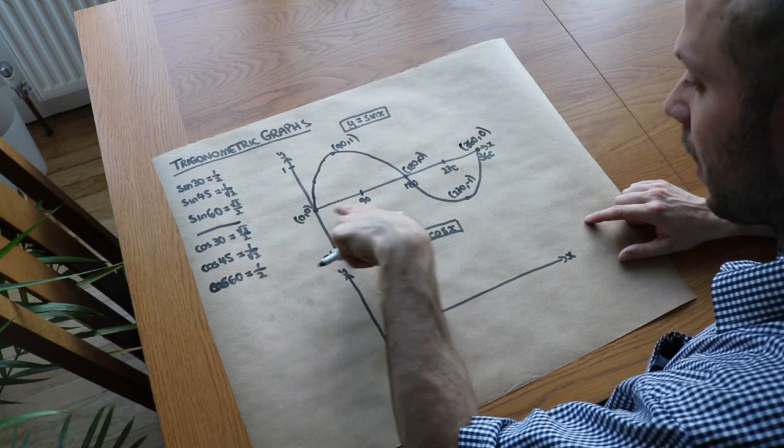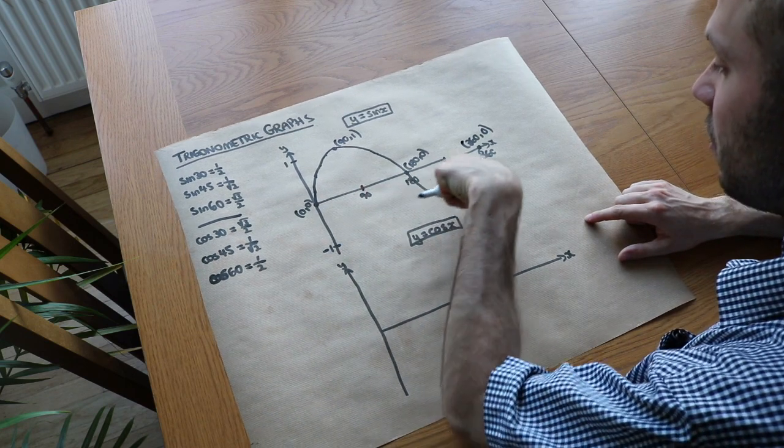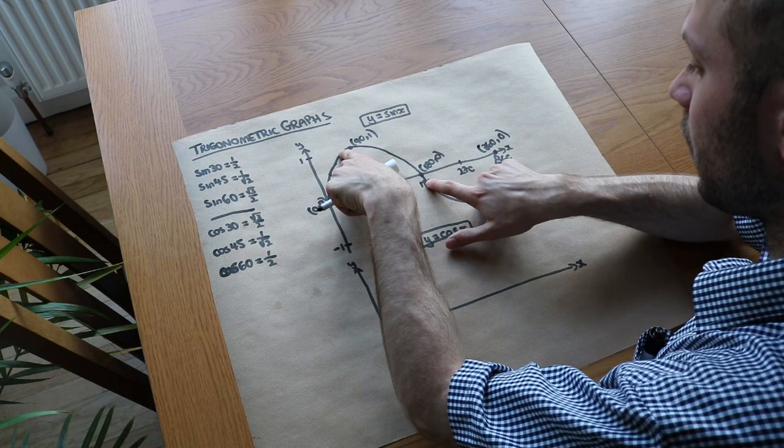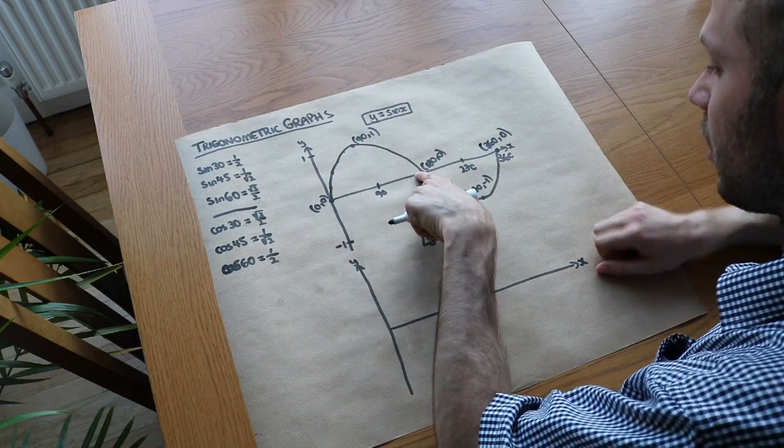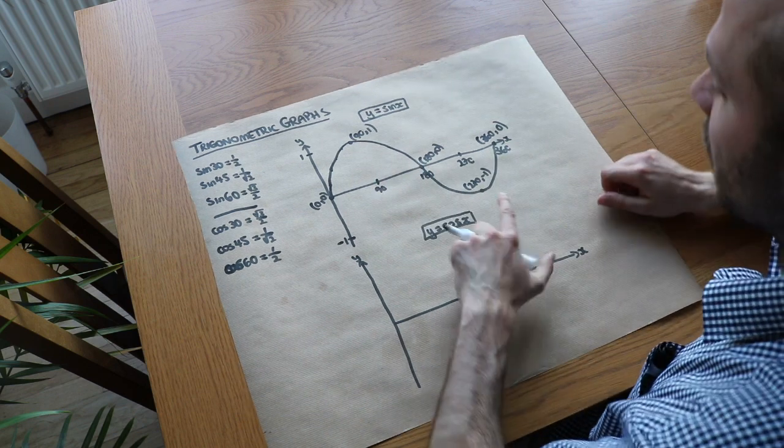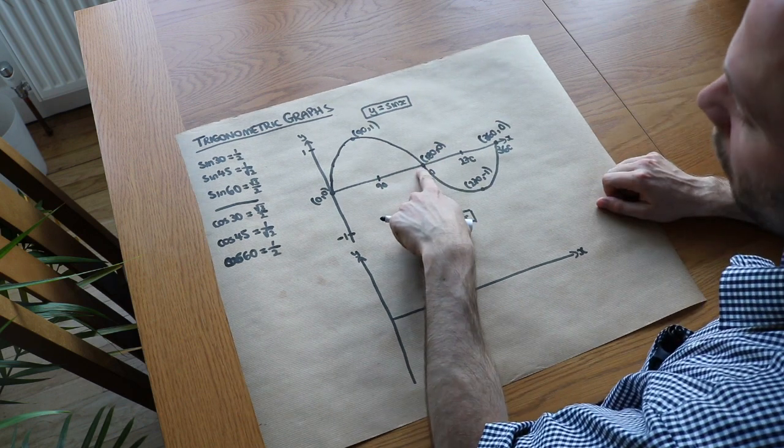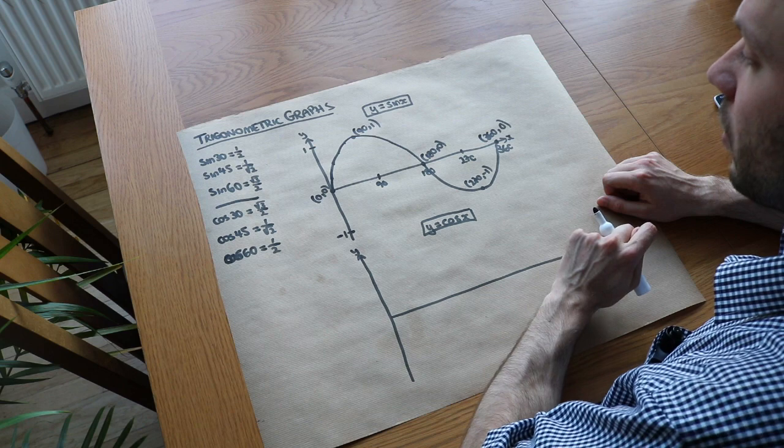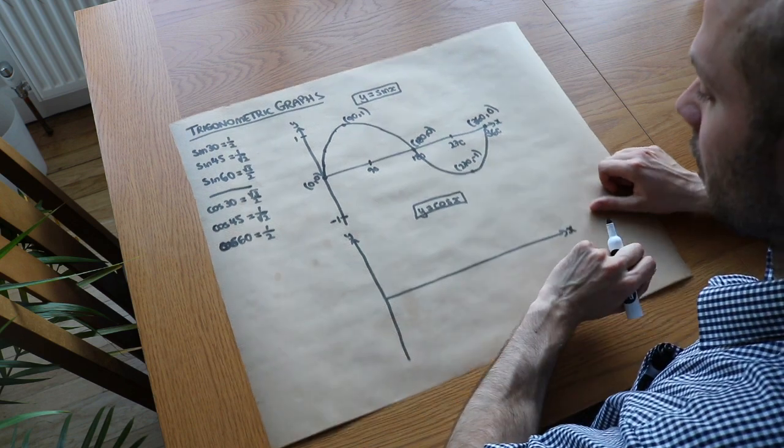So the key thing you need to remember are these key points. You need to know that if you think about multiples of 90, 91, 180, 270, 360, by 90 it's gone up to 1, then another 90 it's gone back down to 0, by 270 it's gone down to minus 1. So an exam question, they might say, what is the coordinate of that point? And you have to work out the coordinate, given your knowledge of the sine graph.